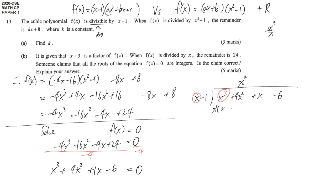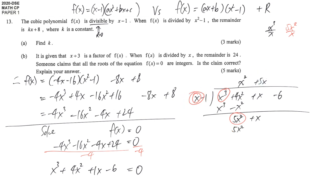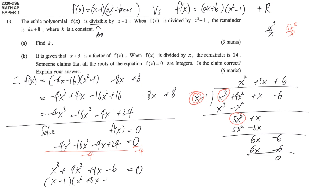Multiply x² by the divisor (x minus 1) to get x³ minus x². Subtract to get 5x². Then 5x² divided by x gives 5x. Multiply 5x by (x minus 1) to get 5x² minus 5x. Subtract: x minus (negative 5x) gives 6x minus 6, so the next quotient term is 6. There is no remainder, confirming x minus 1 is a factor, giving (x minus 1)(x² plus 5x plus 6) equals 0.